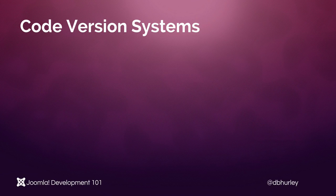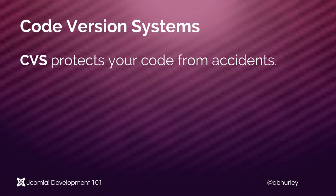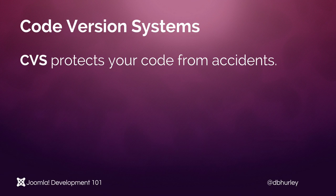First, let's look at code version systems, or CVS. CVS protects your code from accidents. This provides a fail-safe to make sure that you always have a backup of your files stored somewhere besides your local computer. Oftentimes this is done in a cloud-based environment. CVS provides a way of keeping a historical record of your files to protect them from accidents.